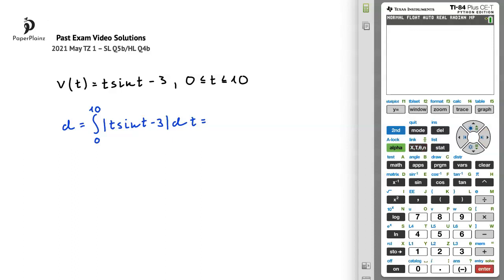Now we just have to press enter, which gives us that the value of the integral is 37.0969, and we round this number to 3 significant figures. The third significant figure is 0, and the fourth significant figure is 9, and since 9 is larger than 4, we'll round up and get that the distance traveled is 37.1 meters.